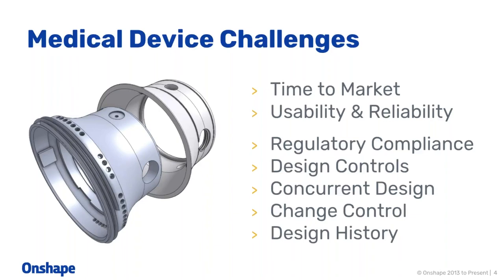What we're going to focus on today is meeting some of the regulatory compliance issues you might face with the FDA, the EU, or any other regulatory body. I'm going to focus on the FDA specifically. What we'll cover is how you record, audit, and keep control of changes, how you get multiple people working on the same project, how you maintain security, how you ensure documents stay within the company, and whether you have a full audit trail and design history. These are traditionally paper-based activities, and we can show how Onshape can help you digitally record that information.